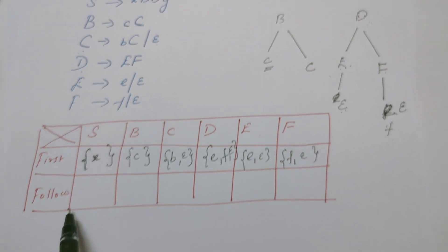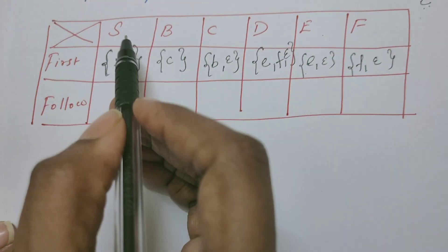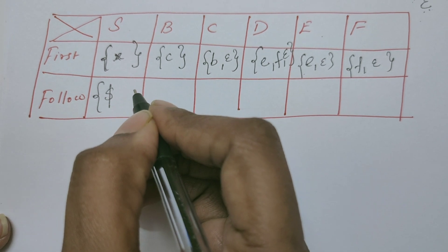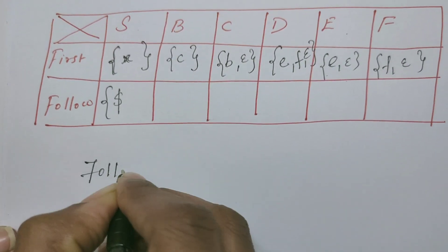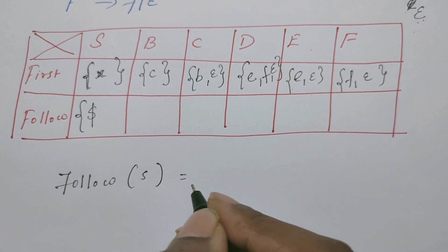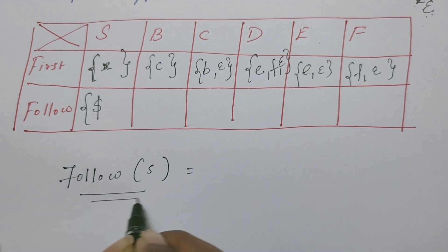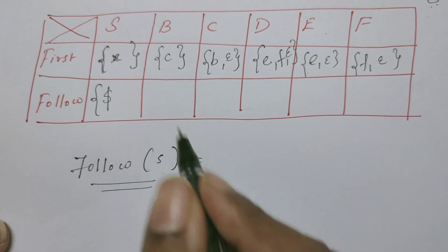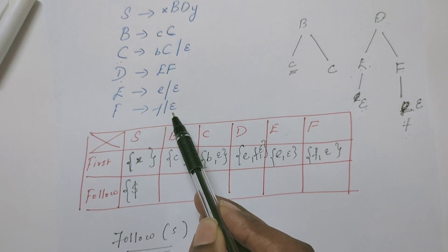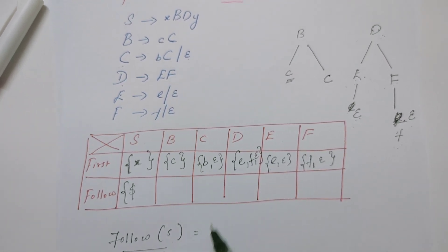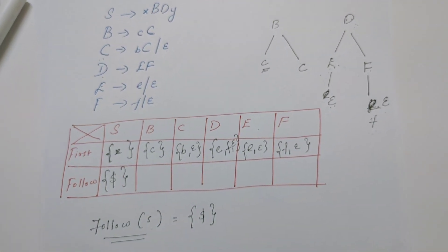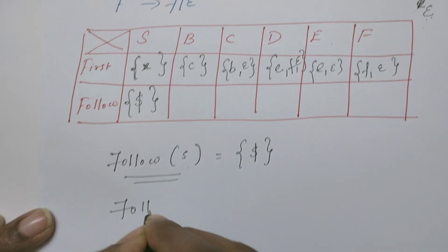Now we are going to find the FOLLOW set. By default, the start symbol of the grammar contains dollar in its FOLLOW set. Now we find FOLLOW of S. To find FOLLOW of S, we select rules which have S on the right-hand side. There is no rule which has S on the right-hand side, so FOLLOW of S contains one and only one symbol, which is dollar.